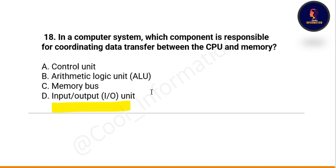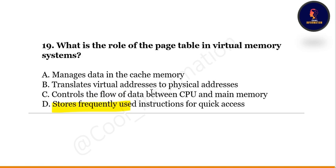Next question: in a computer system, which component is responsible for coordinating data transfer between the CPU and memory? Options are control unit, arithmetic logic unit, memory bus, or input/output unit. The correct option is A — control unit.